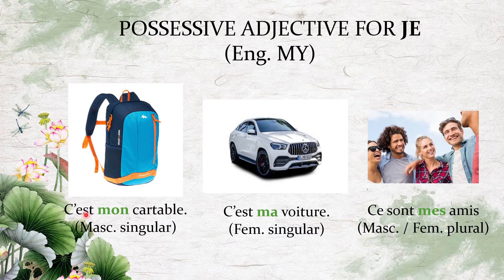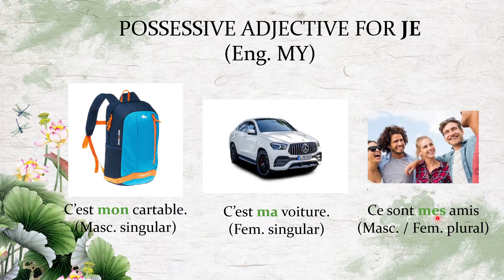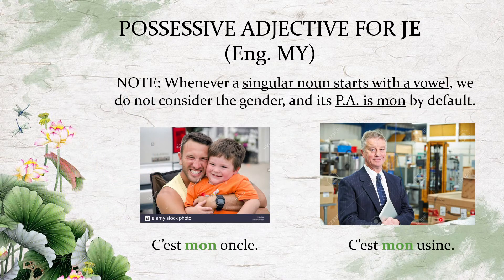For example: 'c'est mon cartable' — this is my bag — because 'cartable' is masculine. 'C'est ma voiture' — this is my car — because 'voiture' is feminine. 'Ce sont mes amis' — these are my friends — whenever you talk about anything plural, it becomes mes.